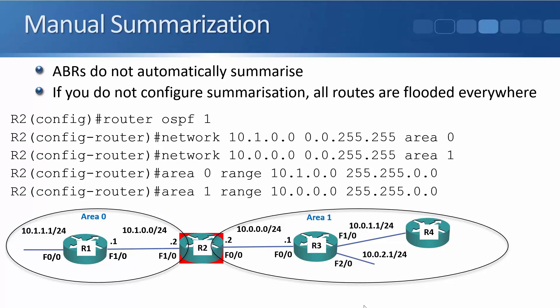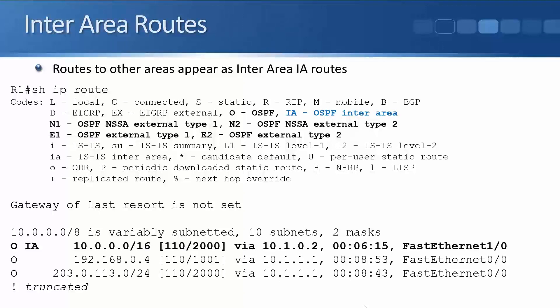When looking in the routing table, inter-area routes — routes learned from an ABR which is in another area — will show up as type O IA for inter-area routes. In the example output, the bottom two destinations are within the same area as this router, and there's an inter-area route which is in another area. Inter-area routes are always learned from an ABR, which is the border between our areas and where we do our summarization.